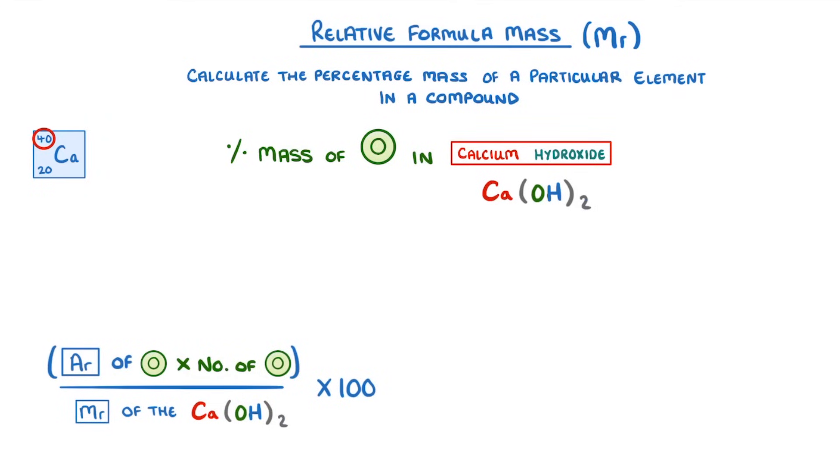So 40 for calcium, 16 for oxygen and 1 for hydrogen. So for the top of our equation we need to do 16 times 2 because we have two oxygen atoms. Remember the 2 after the brackets applies to both the oxygen and the hydrogen.